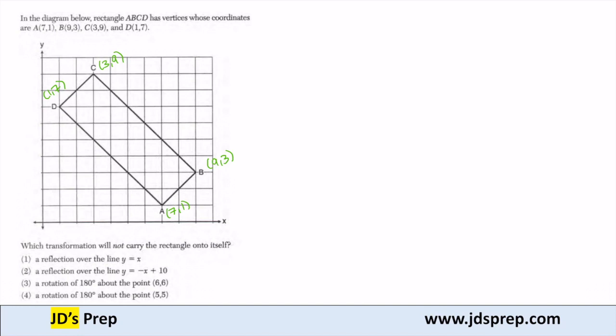So the first transformation is a reflection over the line y equals x. Y equals x goes through the origin with a slope of 1. So that is this line here. If I reflect the rectangle over that line, I'm just going to get the same exact rectangle. So I know it can't be 1.